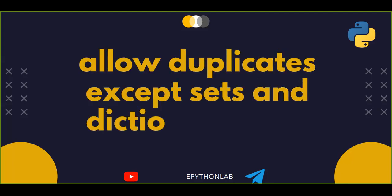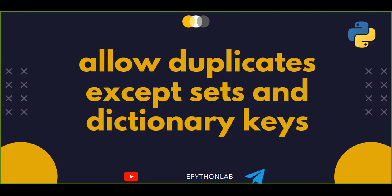Lists and tuples allow duplicate entries, while sets and dictionaries do not. You can store duplicate data in lists and tuples, though duplicate data is generally not desirable as a data scientist. Sets and dictionaries do not allow duplicate entries — that's why most of the time we prefer dictionary to store data, to avoid duplicates. In a dictionary, keys cannot be duplicated; one key refers to one value.